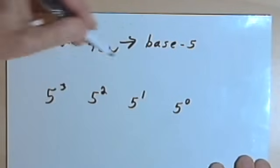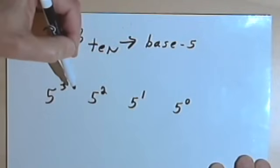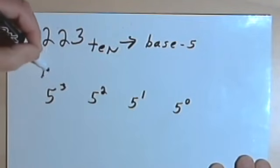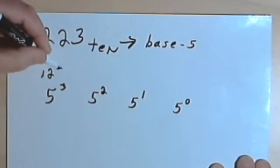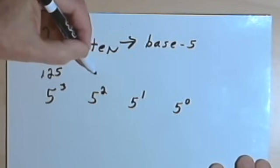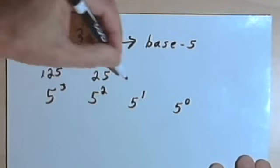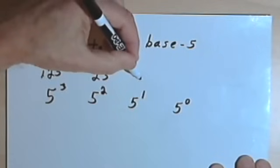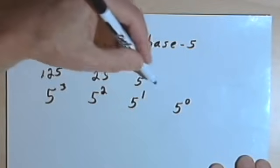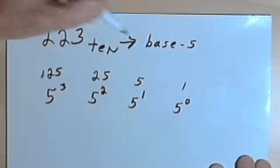I'll write what those powers equal above each one. So 5 to the 3rd is 125, 5 squared is 25, 5 to the 1st is 5, and 5 to the 0 power is 1.